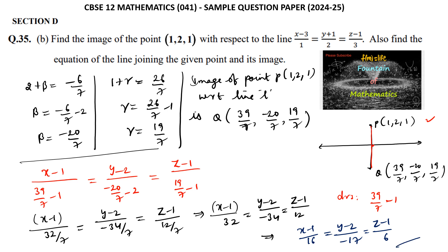So this is the required equation of line PQ, and the image point Q is (39/7, −20/7, 19/7).